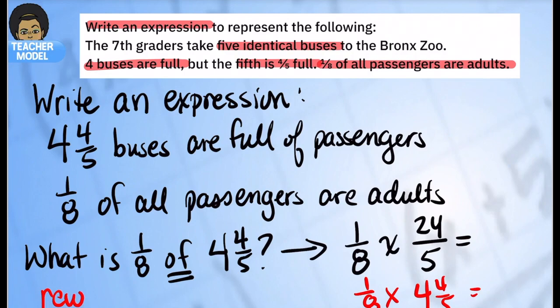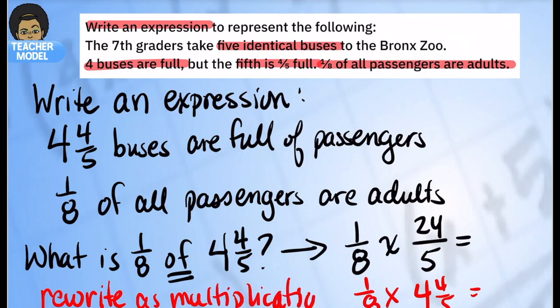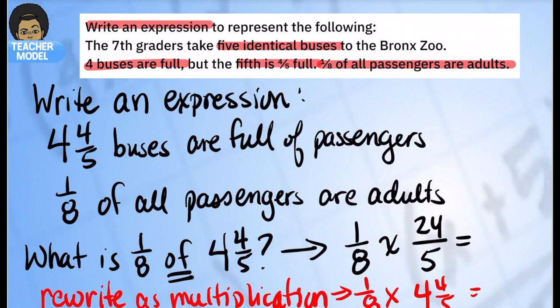Again, we're going to rewrite as multiplication. Any time we want to find a part of a number — a fraction of a number — we rewrite this as a multiplication sentence.